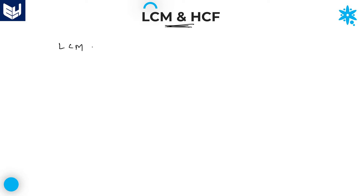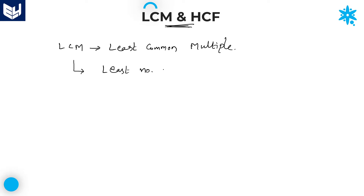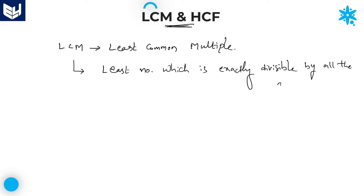What is LCM? The full form of LCM is Least Common Multiple. LCM is nothing but the least number which is exactly divisible by all the given numbers. That is called LCM.